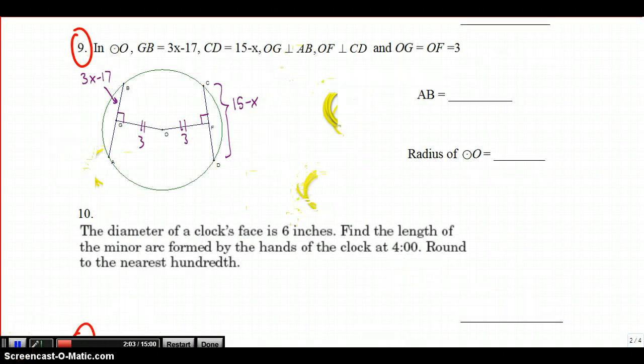This is problem number 9, and here's the setup for that problem. Since chord CD and chord BA are both three units away from the center of the circle, that means that BA is equal to CD. The length of CD is 15 minus x. The length of BA is not just 3x minus 17.